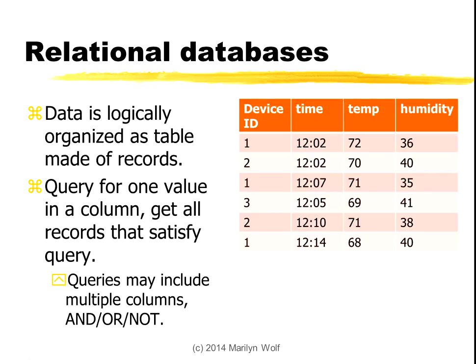We have different fields or columns in a table. When we do a search, we can ask the database which records in this table have, for instance, the device ID field equal to one. The database will then search the entire table and give us every record whose ID is equal to one — that would be this line, and this line, and this line. That gives us all the data in each of those records.